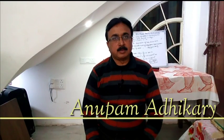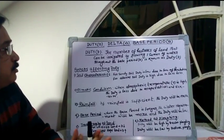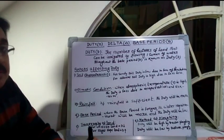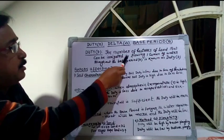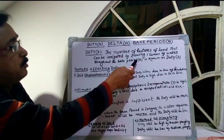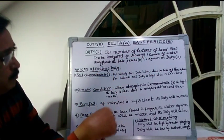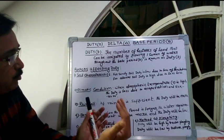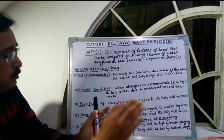Today I shall discuss the irrigation engineering chapter: Duty, Delta, and Base Period. Please like and subscribe my channel. Duty — the number of hectares of land that can be irrigated by flowing one cubic meter of water throughout the base period is known as duty. Throughout the base period, one cubic meter of water is supplied; the hectares of land irrigated is called duty.